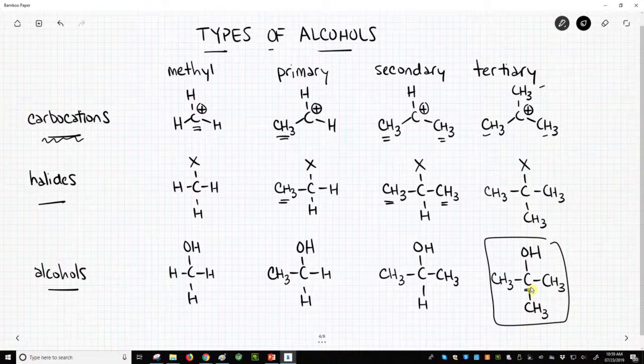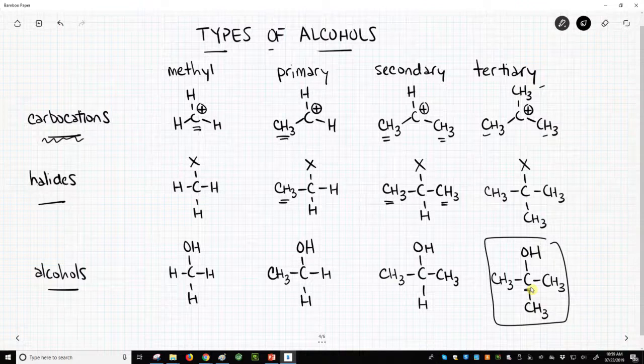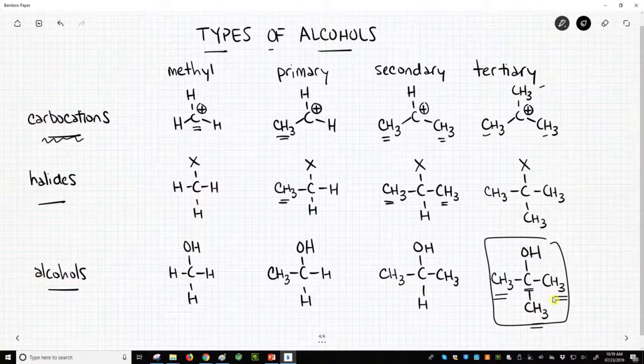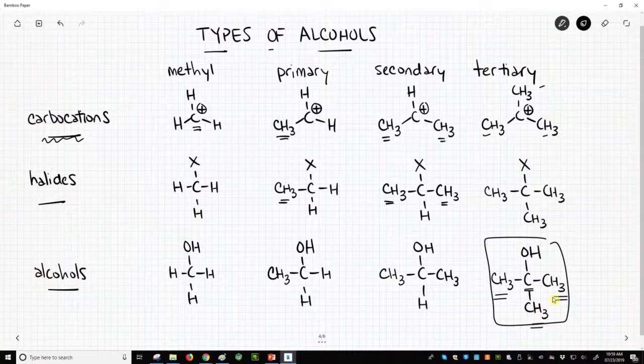However, if you want to do something like an SN1 reaction, when you form a carbocation, all this extra substitution helps to stabilize the carbocation. So what's good for one reaction may be bad for another. It's not a good or bad label. It's simply these are the different types of substitution, and these different substitution patterns have an effect on the various reactions we're going to learn for our alcohols.